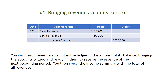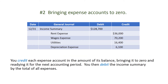Here are the steps for closing the books. Number one: bringing revenue accounts to zero. You debit each revenue account in the ledger in the amount of its balance, bringing the accounts to zero and readying them to receive revenue for the next accounting period. You then credit the income summary with the total of all revenues. Number two: bringing expense accounts to zero. You credit each expense account in the amount of its balance, bringing it to zero and readying it for the next accounting period. You then debit the income summary by the total of all expenses.